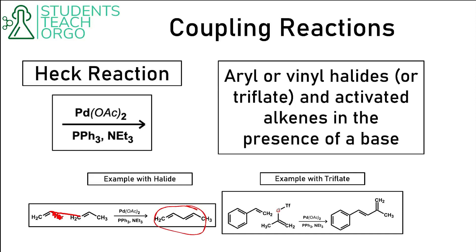The same thing happens with a triflate — we imagine the triflate goes away and make a bond between those two carbons to give us the product. Worth noting is that this double bond in the product is the E stereoisomer, which is the more common product. Students sometimes also call it the trans double bond, but the E or trans double bond will be the more abundant product after this coupling.